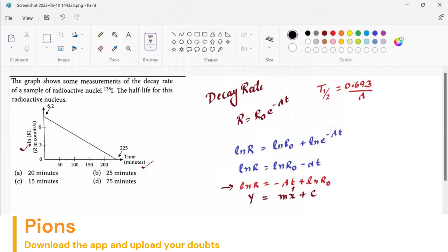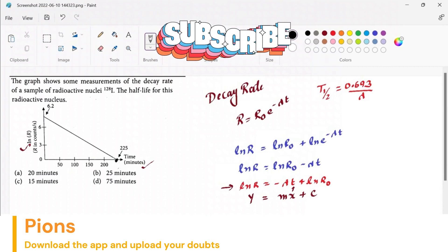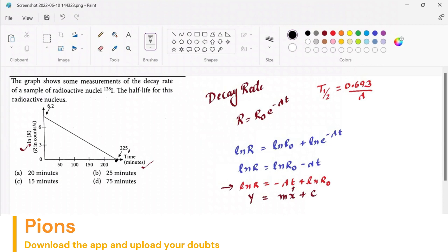We will get λ by using the slope. Now, let's choose this point: 225 comma 0. And let's choose this point: 0 comma 6.2. We got two points.